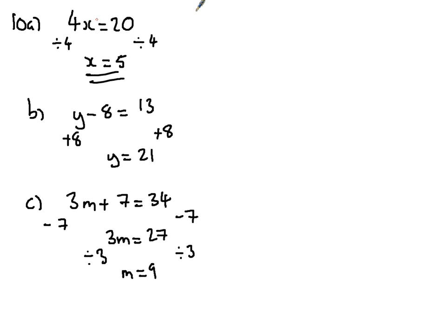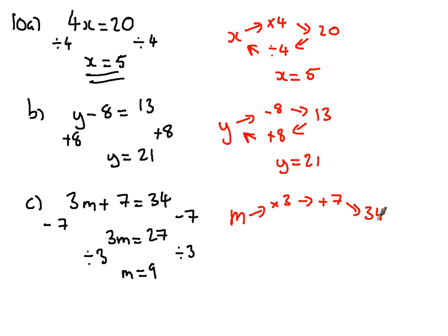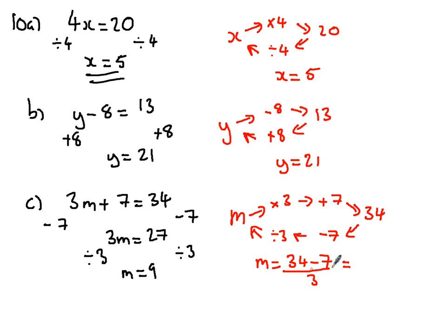Another way to teach it: if you start with x, we times it by 4, and that gives 20. Working back, the opposite of multiplying is dividing. For y: the first thing we do to y is take 8 away, giving 13. Working back, instead of taking away, we add — so 13 add 8 gives y equals 21. For m: we times by 3, then add 7, giving 34. Working back, take 7 away and divide by 3. So m equals 34 take 7, which is 27, divided by 3 equals 9.